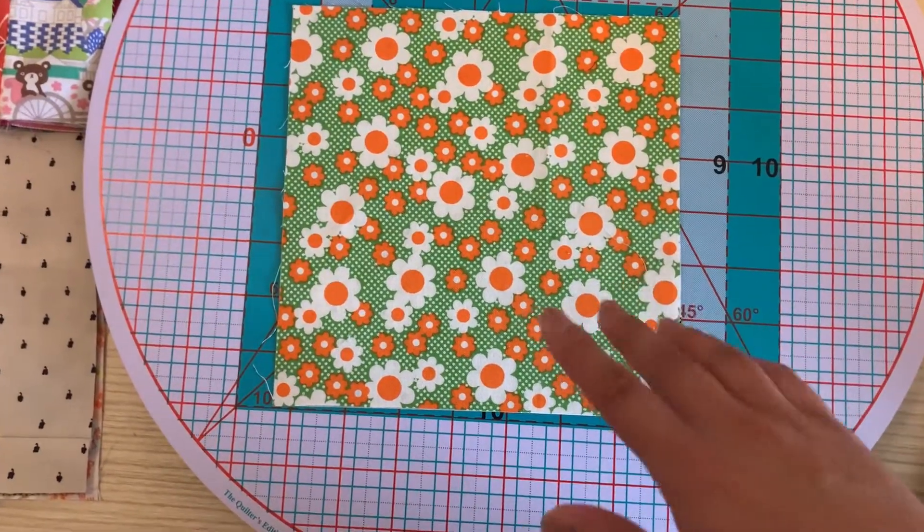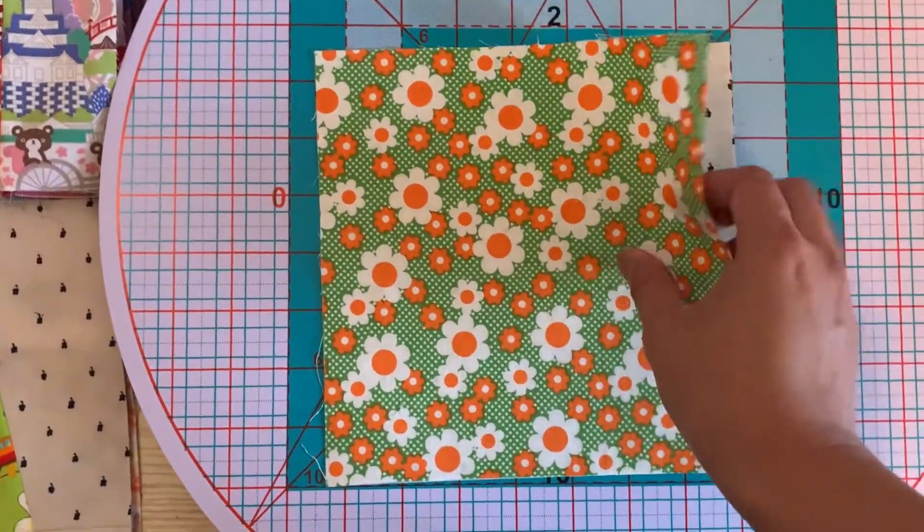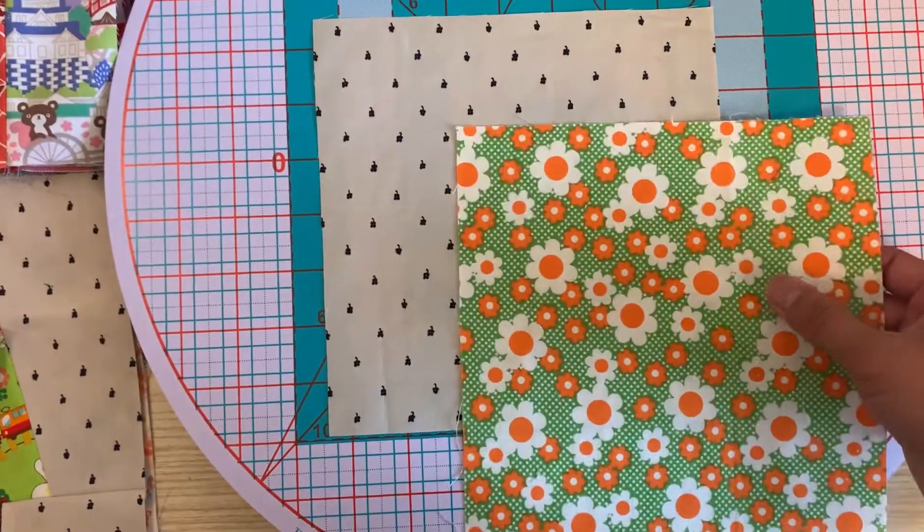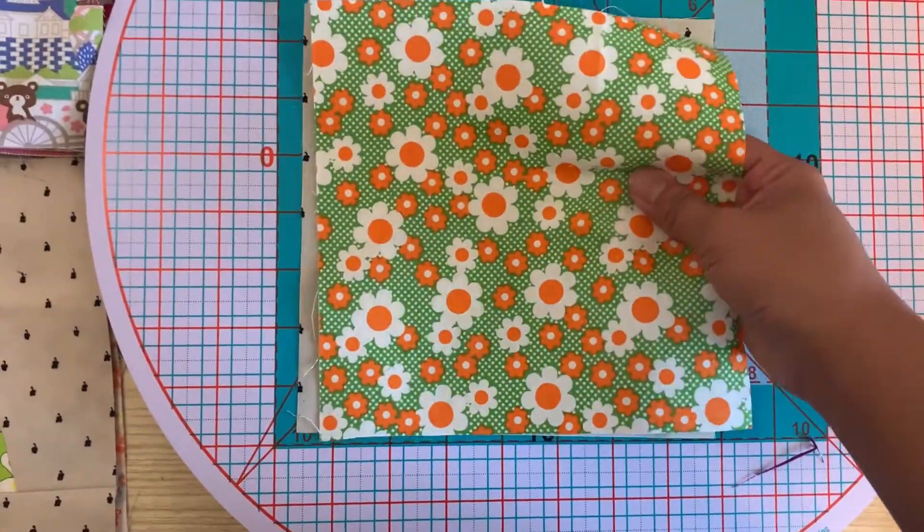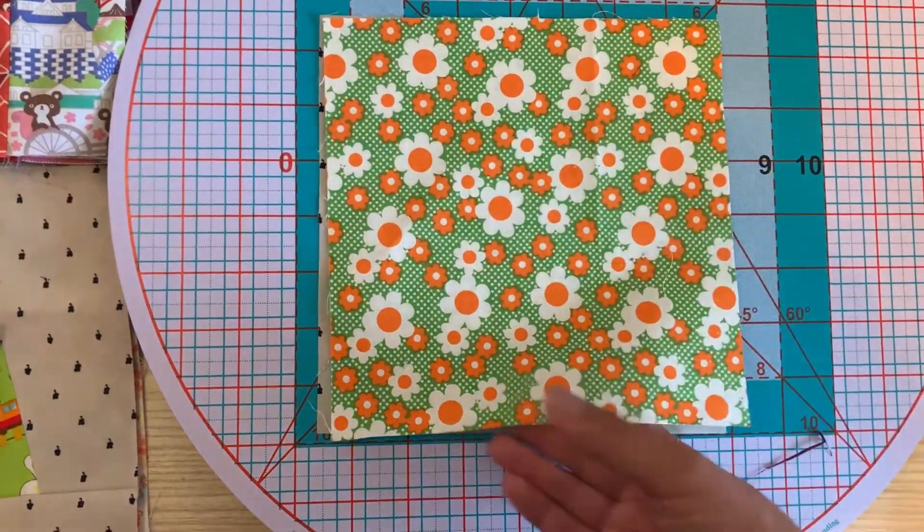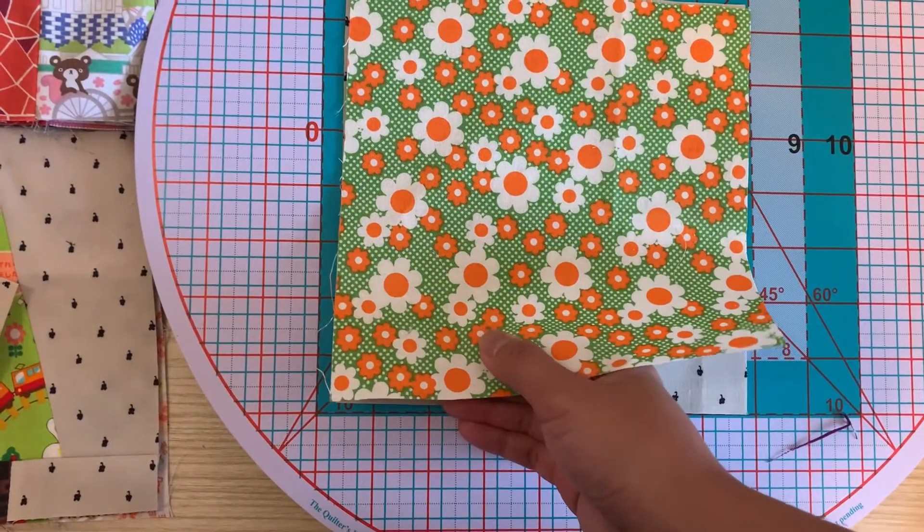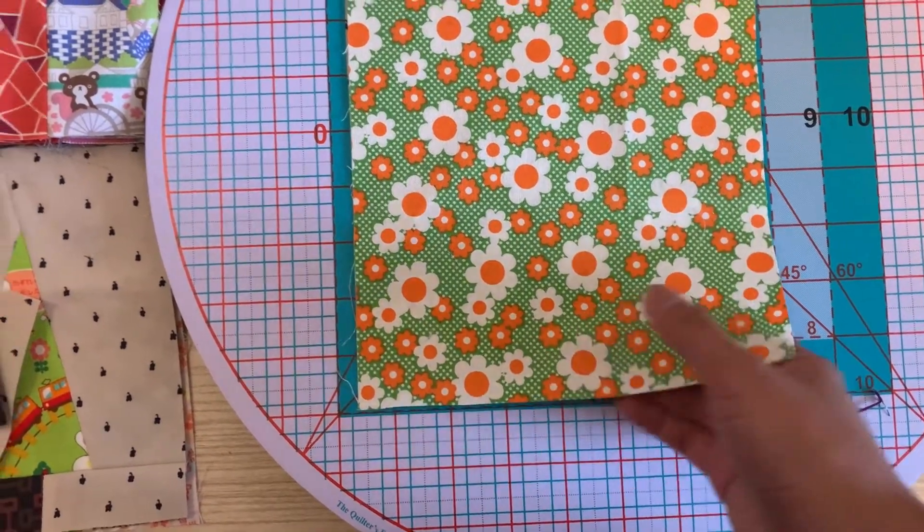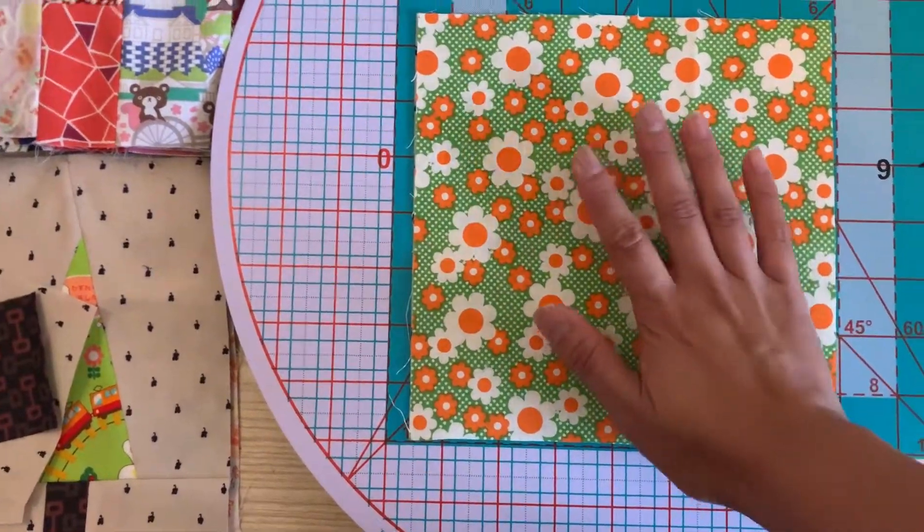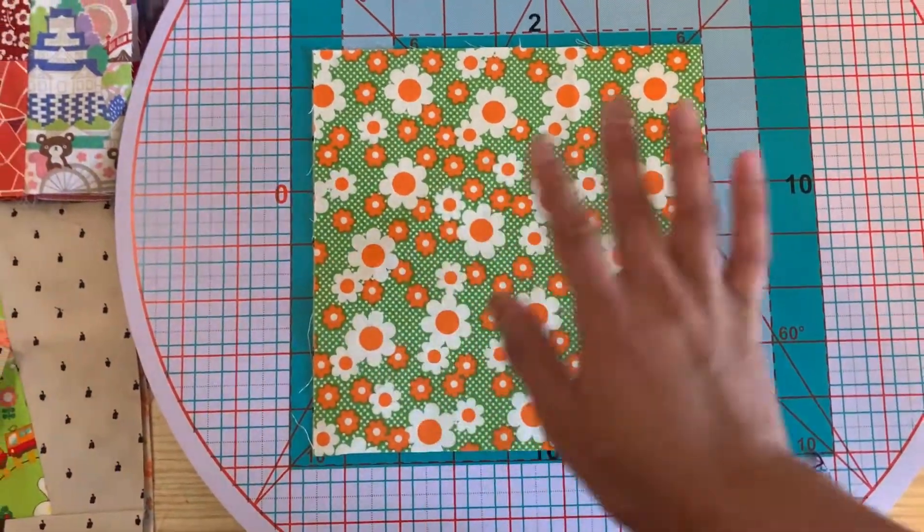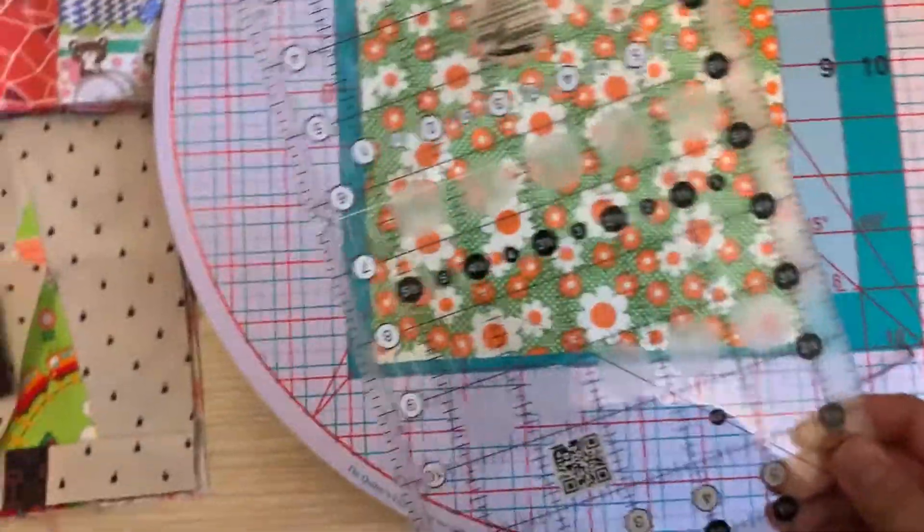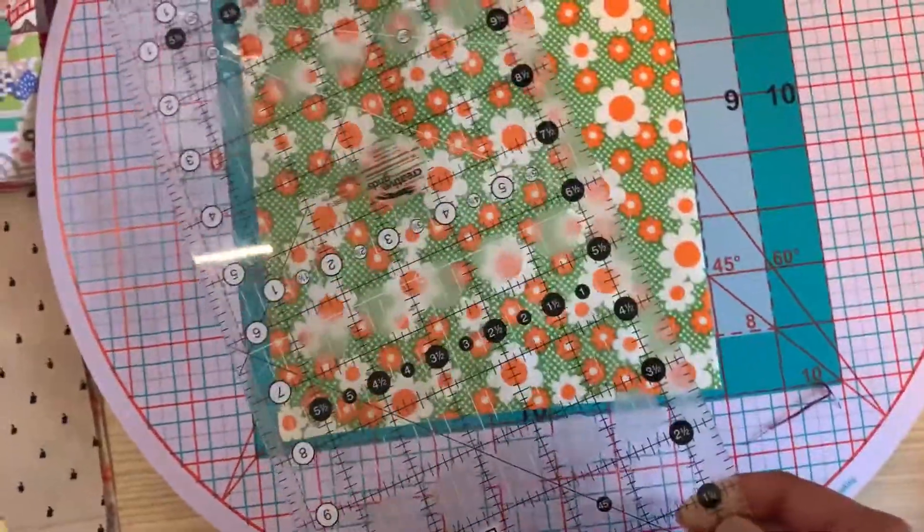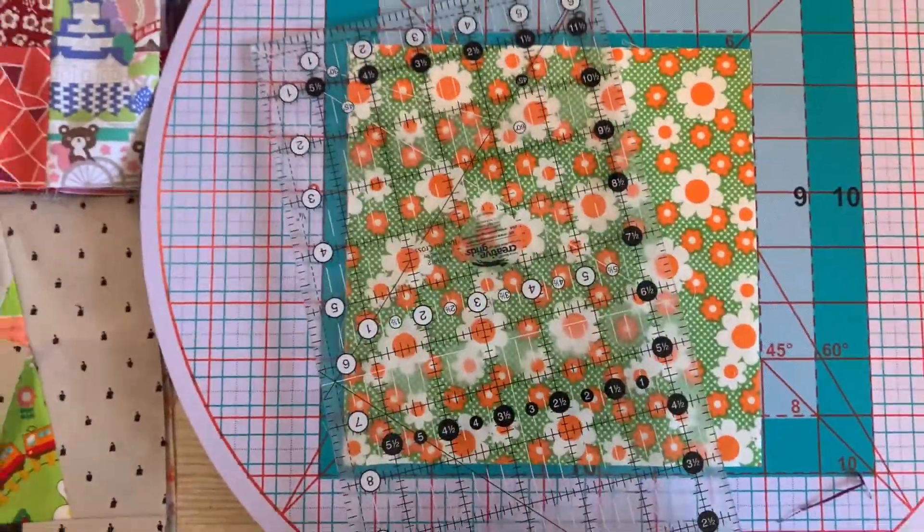Okay, so first I have my two squares, seven and a half by seven and a half. I'm laying them on top of each other. You don't have to be super precise on this because they are like wonky trees, so you're not going to need to be too precise, which is the good thing.